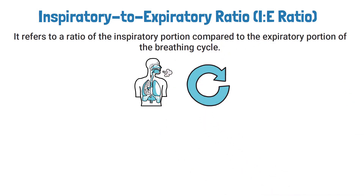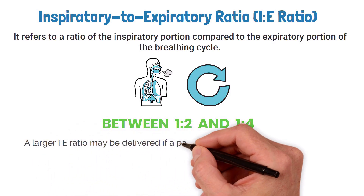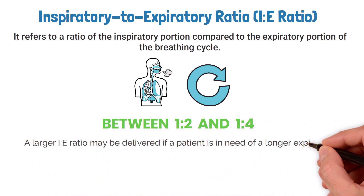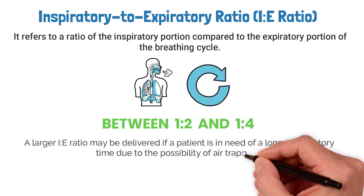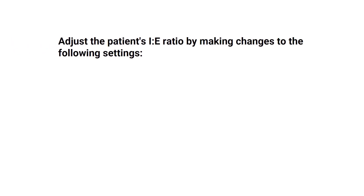For patients on the ventilator, the normal IE ratio is between 1:2 and 1:4. A larger IE ratio may be delivered if a patient is in need of a longer expiratory time due to the possibility of air trapping. If you need to adjust the patient's IE ratio,